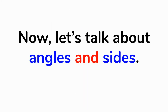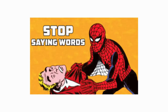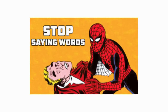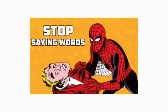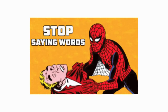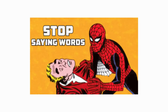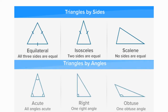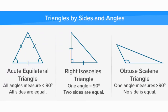Now let's talk about angles and sides at the same time. We already covered the sides — equilateral, isosceles, and scalene — and the angles — acute, right, and obtuse. But we can also classify triangles by sides and angles at the same time.